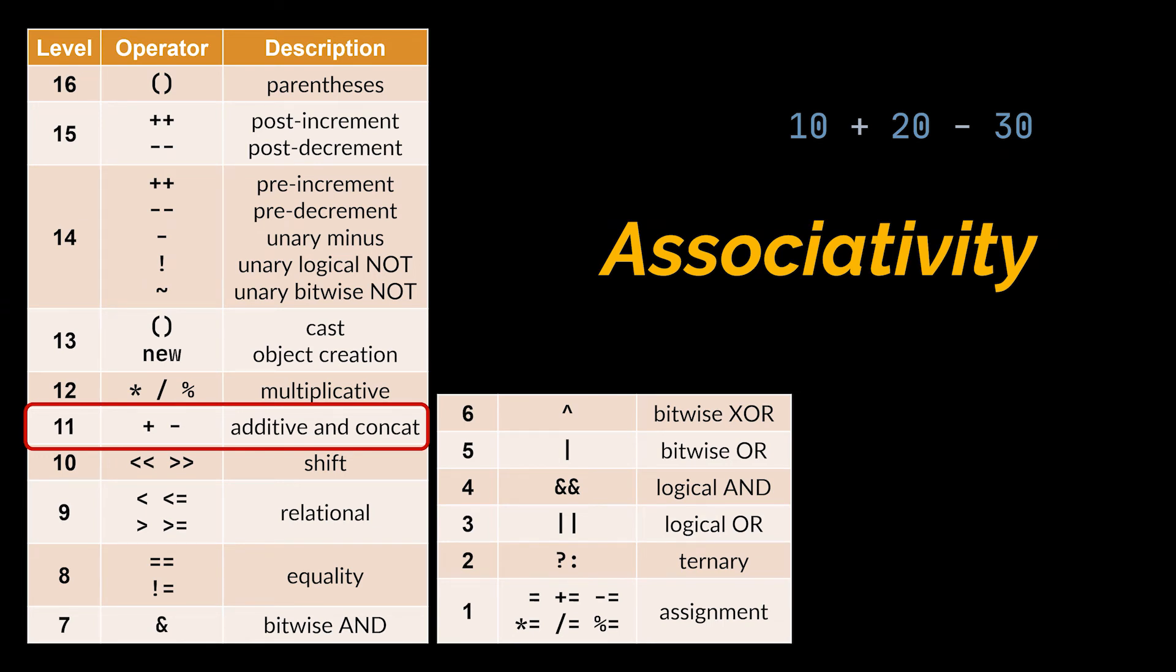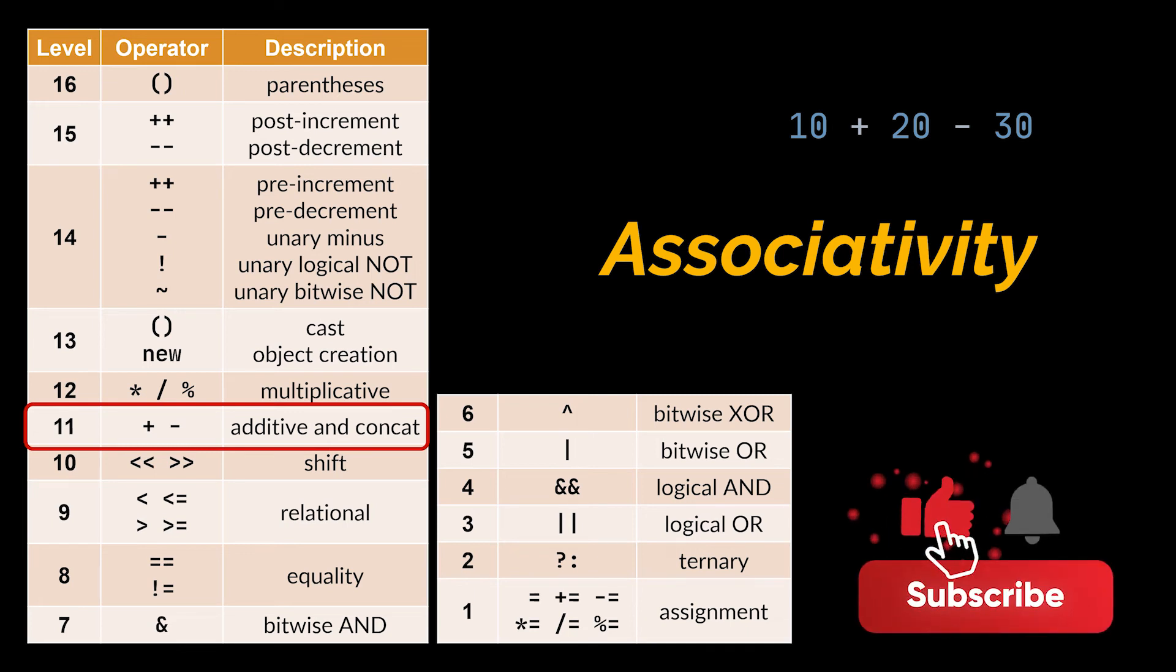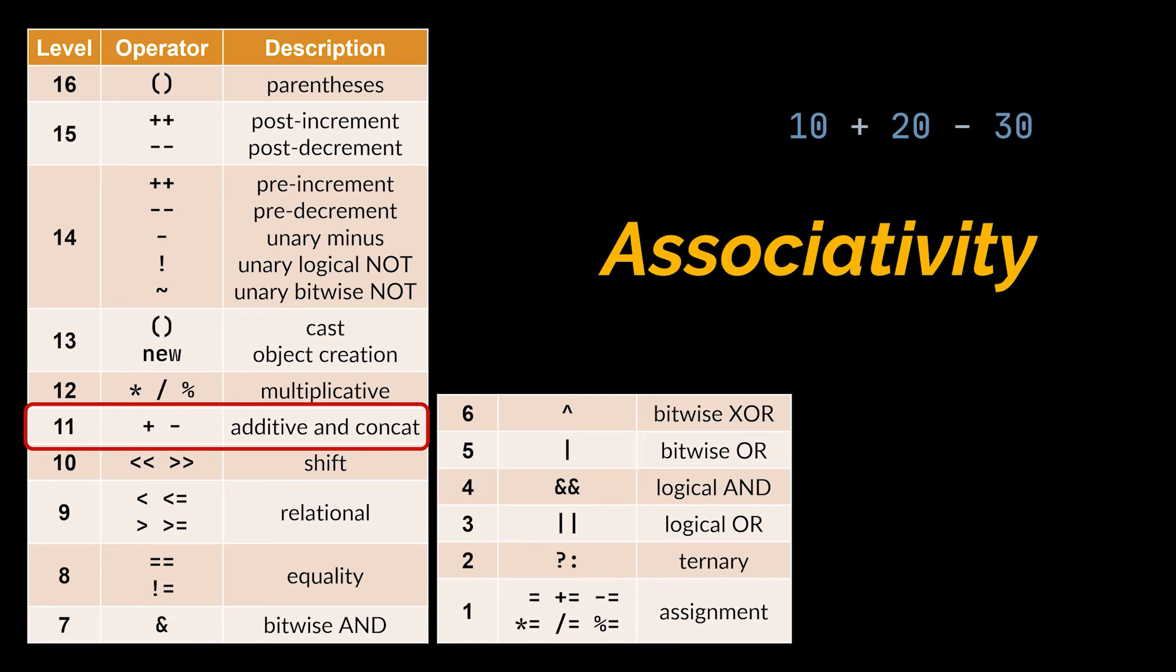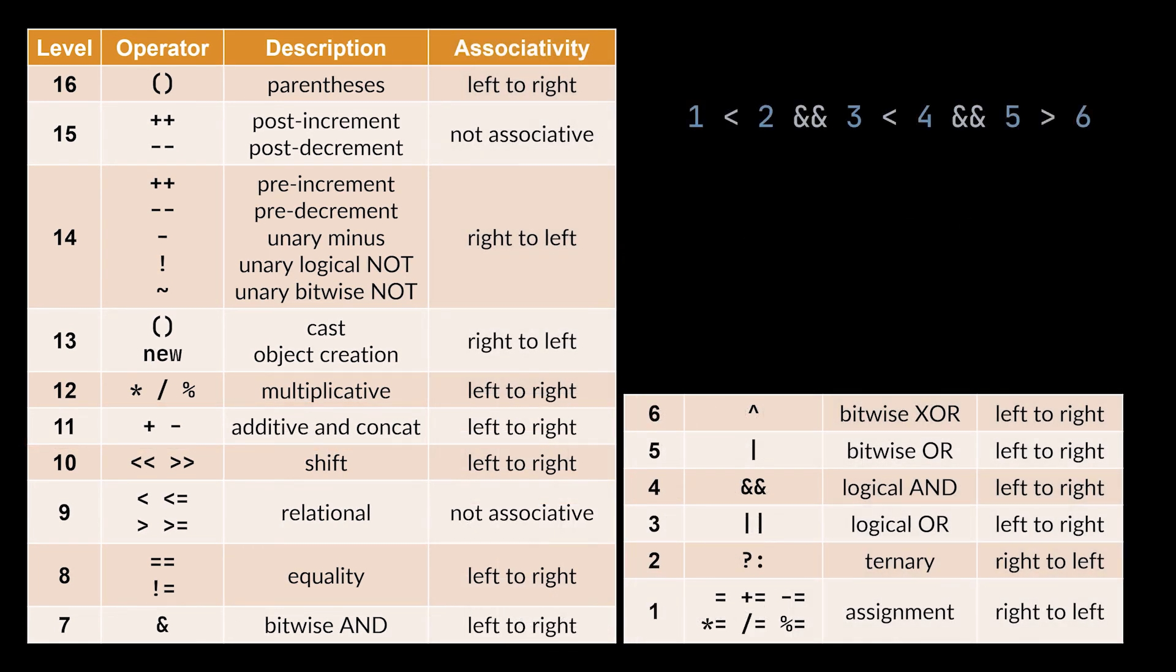If two or more operators with similar precedence exist within the same expression, then this expression is evaluated according to its associativity, either left to right or right to left. In the associativity column we added to our table, you can see that the AND operator has an associativity of left to right, which means that in our previous example, the LEFT AND operator is executed first.